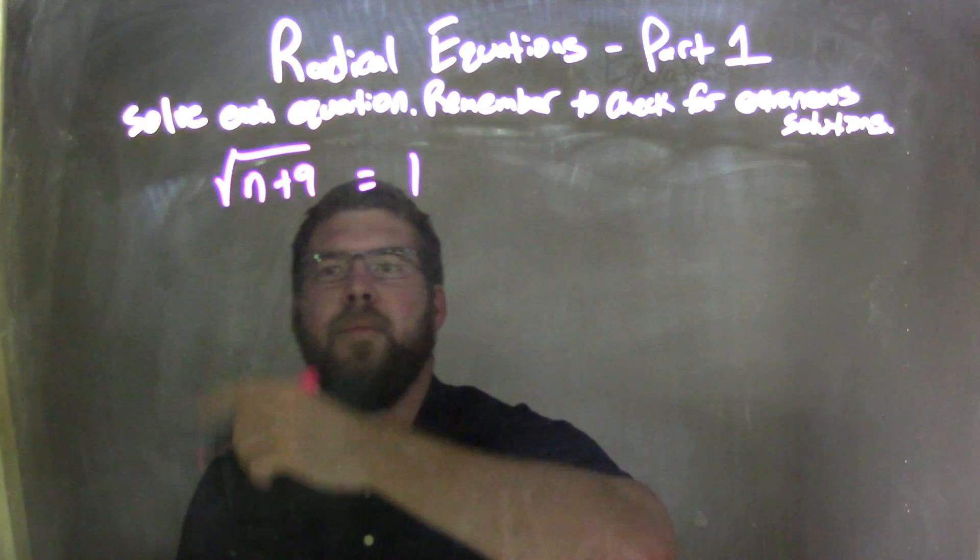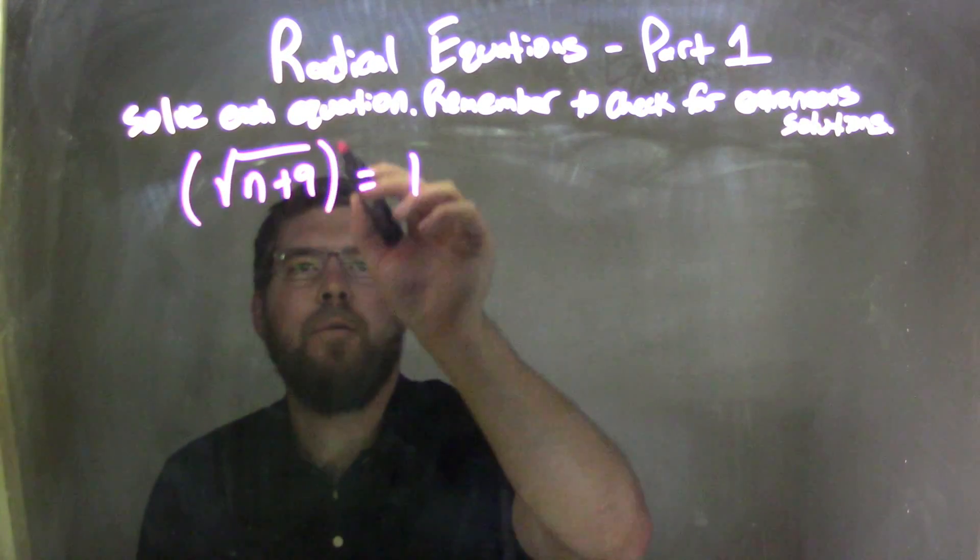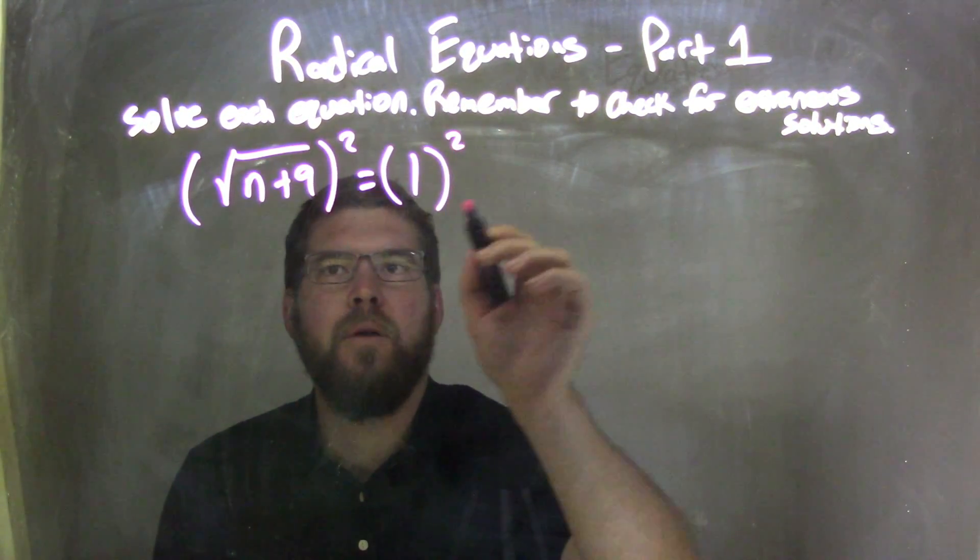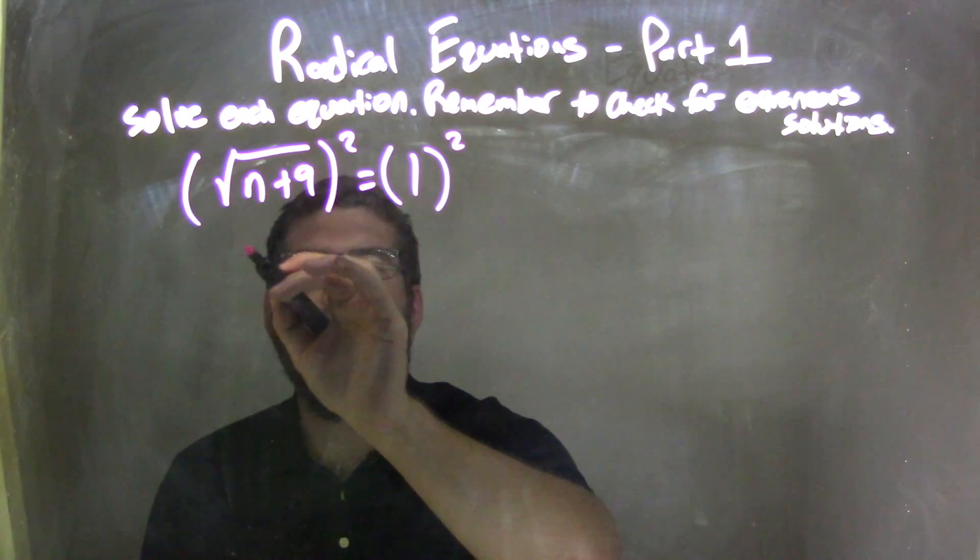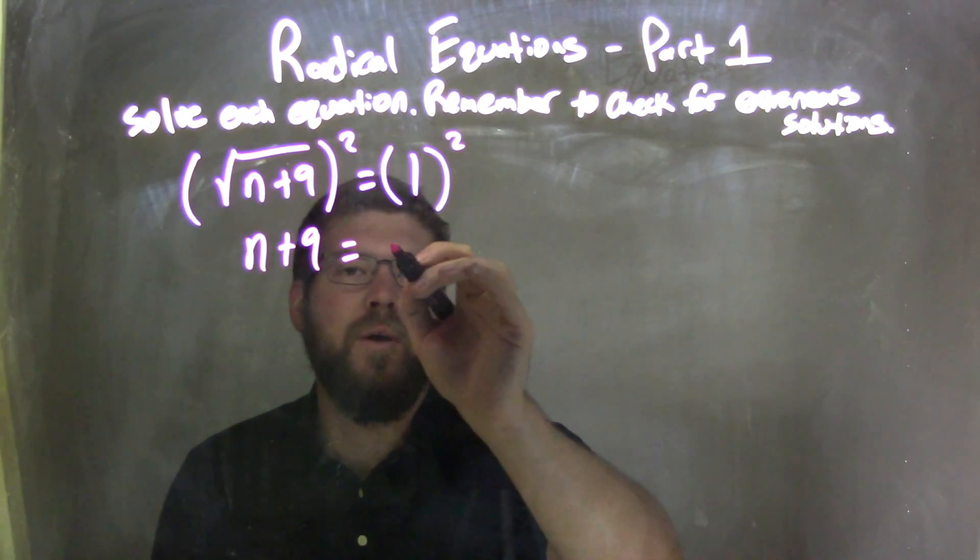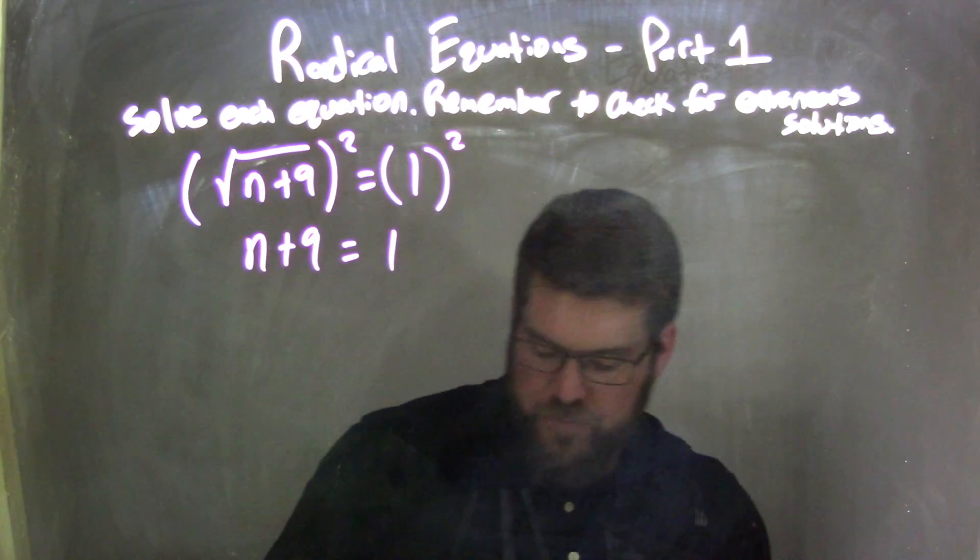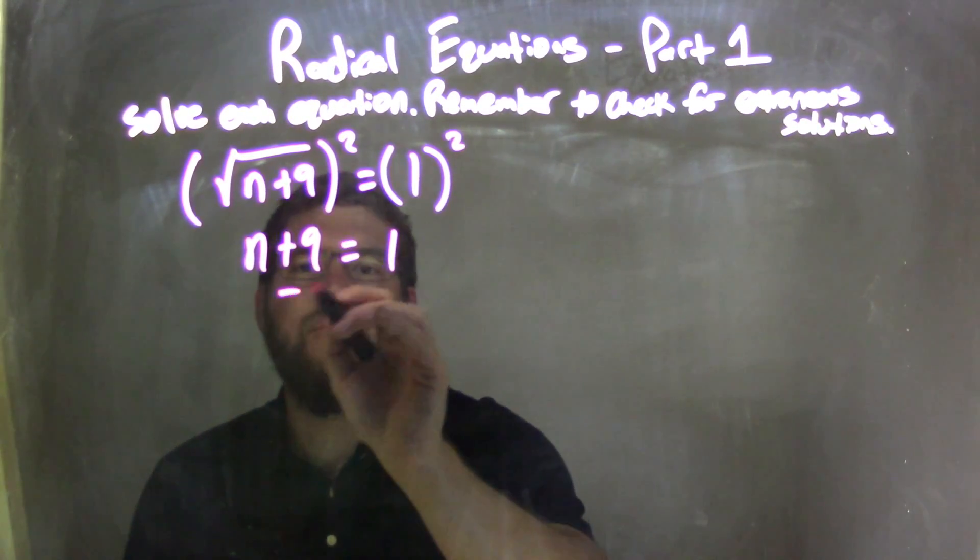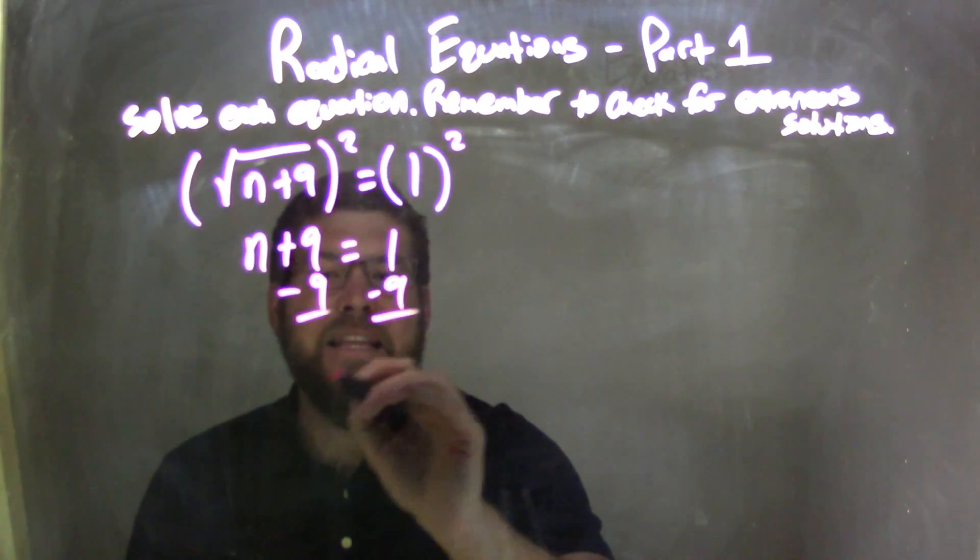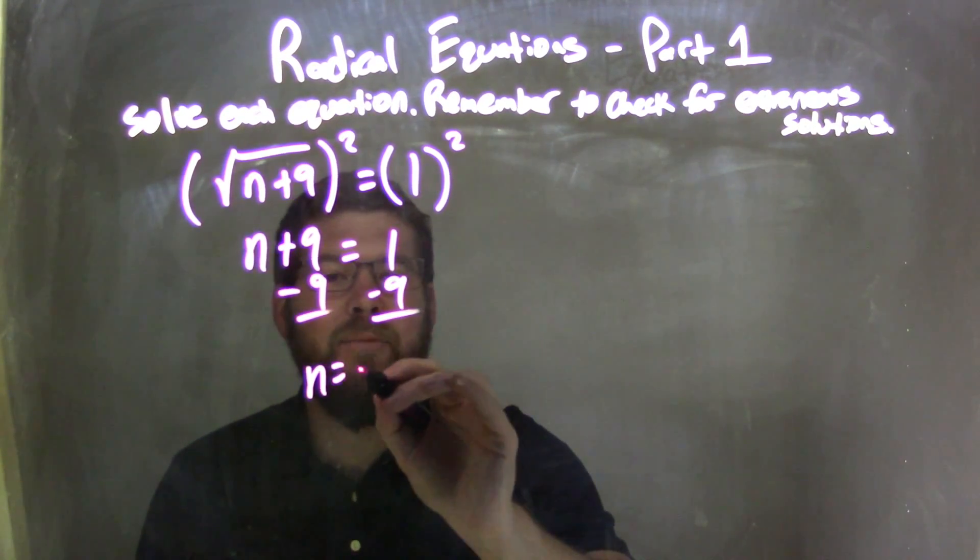My first step is to eliminate that square root. I'm going to square both sides here. And in doing so, I eliminate the square root on the left, leaving me with n plus 9 equals 1 squared, which is just 1. I then need to subtract 9 from both sides, leaving me with n equals 1 minus 9, which is negative 8.